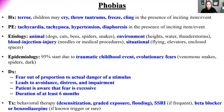Common phobia categories include animal-related (dogs, cats, bees, spiders, snakes), environmental stressors (heights, water, thunderstorms), blood-injection-injury (needles or medical procedures), and situational (flying, elevators, enclosed spaces). Diagnostic criteria: fear out of proportion to the actual danger, leading to avoidance, distress, and impairment; the patient is aware their fear is excessive; duration of at least six months.